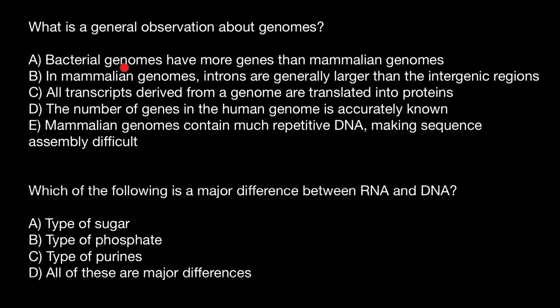Variant A: bacterial genomes have more genes than mammalian genomes. This is of course a wrong statement because bacterial genomes are much simpler, much smaller than any of the eukaryotic organisms, to which the mammalian group belongs.